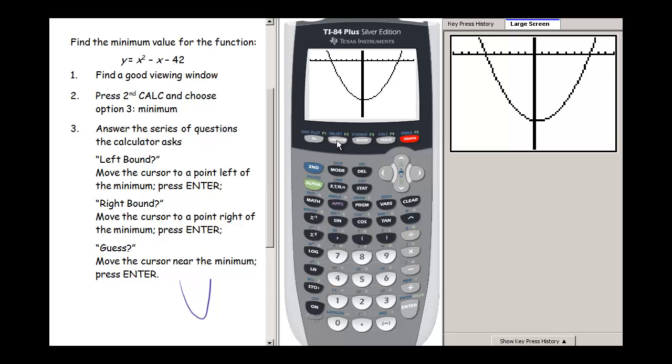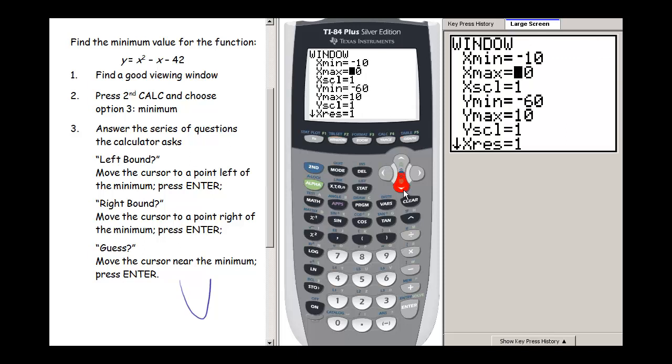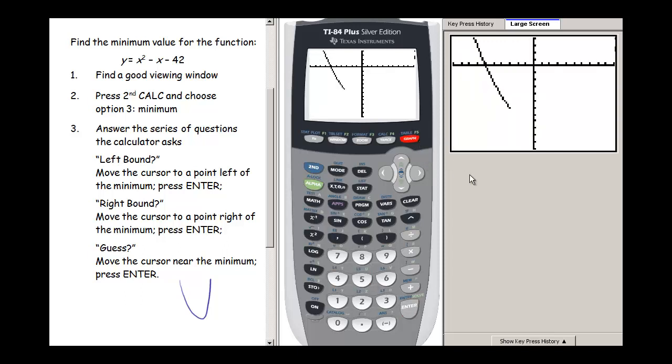So let's go back to our window and notice I'm going from negative 60 up to 10 with a y scale of 1. Let's go up a little higher, maybe up to 20, and let's make our y scale either 5 or 10. Let's try 5. Okay, so we can see our parabola here pretty well.